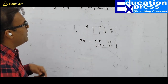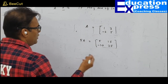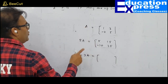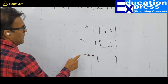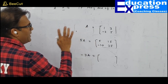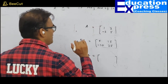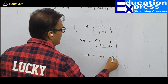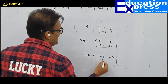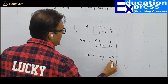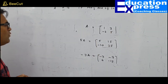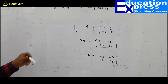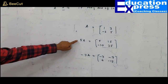Can we multiply a matrix by negative numbers? Of course. Suppose I want to multiply matrix A by −3: 1×(−3)=−3, 3×(−3)=−9, −2×(−3)=6, 5×(−3)=−15. The matrix can be multiplied by any arbitrary constant.